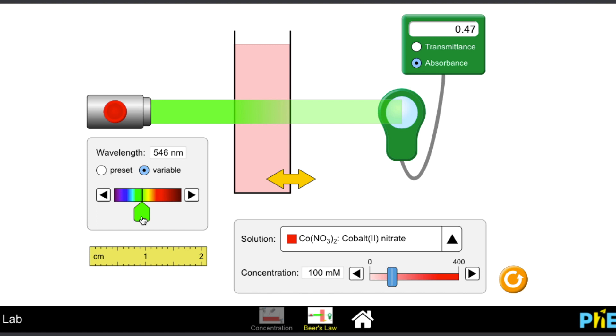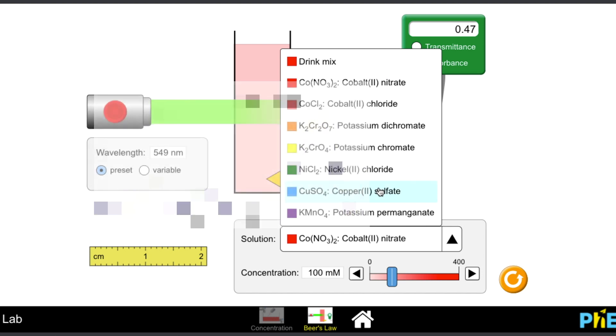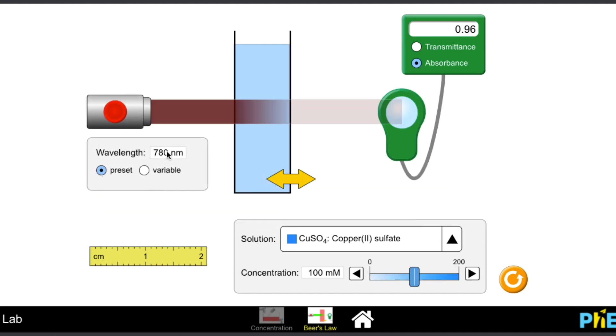For a given solution, you need to find the wavelength of maximum absorbance. Here in the PhET simulator, the preset is 549 nanometers for a red solution. However, if you were to go to a blue solution, the preset is 780. So let's go back to the 549 that we used on the red solution and see what it is like. The absorbance is very low. So what works for one solution will not work for the other.